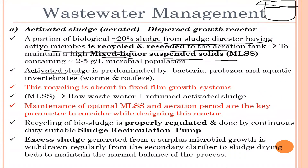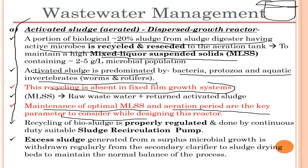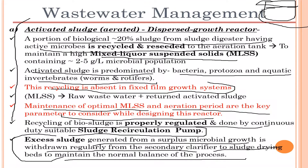The activated sludge is predominated by bacteria, protozoa, and aquatic invertebrates such as worms and porifers. This recycling is absent in fixed film growth systems and is only present in dispersed growth systems. Maintenance of optimal MLSS (mixed liquid suspended solids) and aeration period are key parameters in designing the reactor. Recycling of bio-sludge is regulated by a continuous sludge recirculation pump. Excess sludge generated from surplus microbial growth is withdrawn regularly from the secondary clarifier to sludge drying beds to maintain normal process balance.